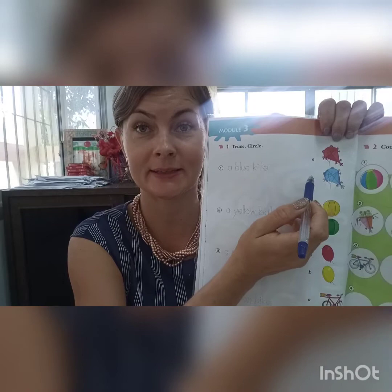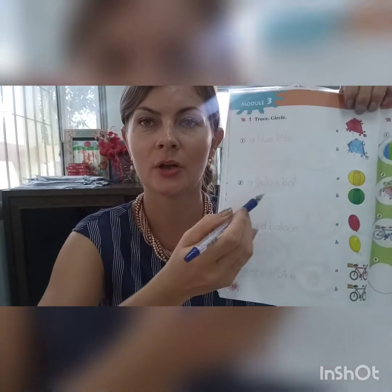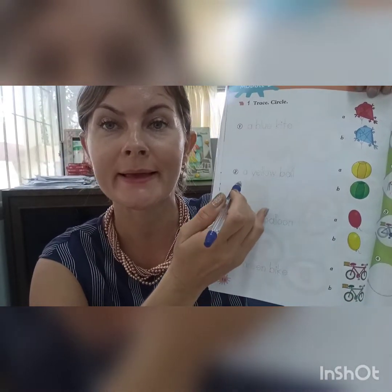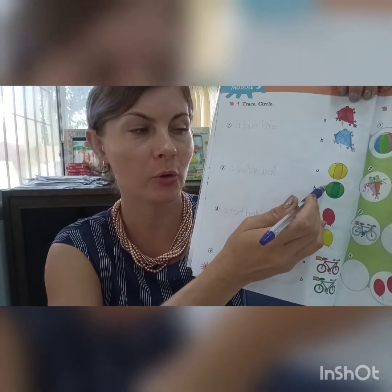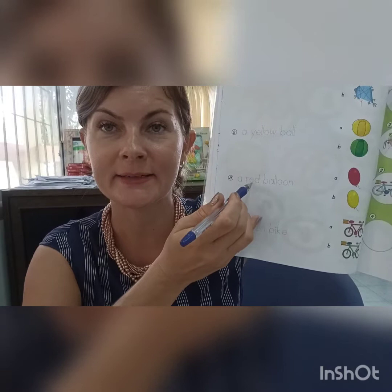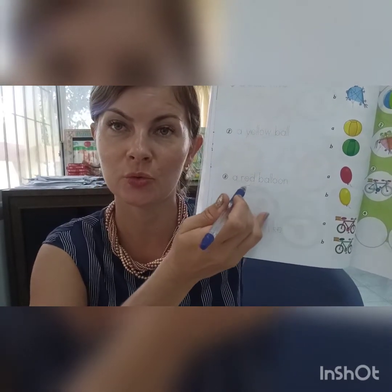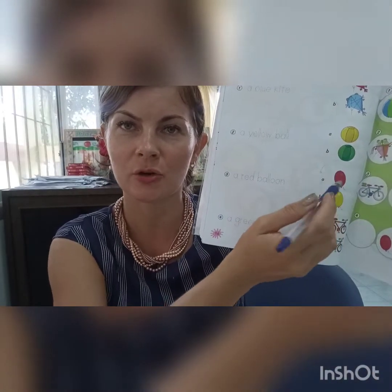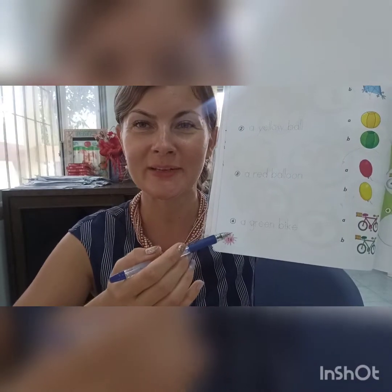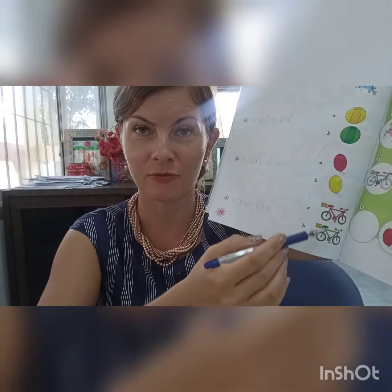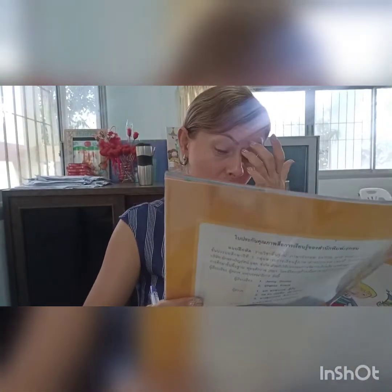What about next? A yellow ball — where is the yellow ball? And what's next? A red balloon — find where is the red balloon and circle it. And what about this? A green bike — find the green bike and then circle.